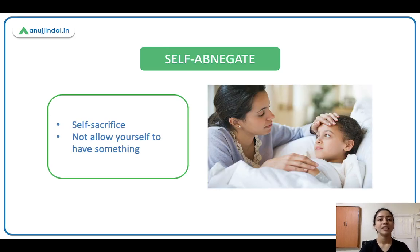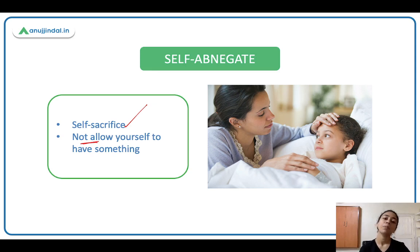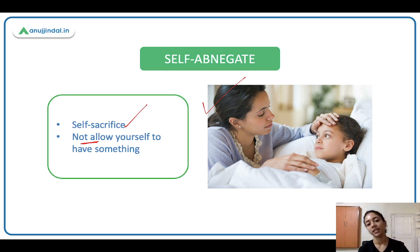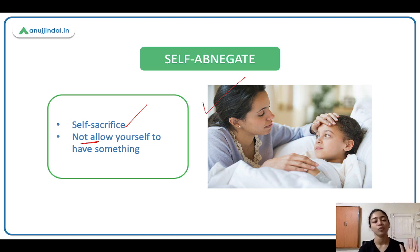Self-abnegate means self-sacrifice — not allow yourself to have something. Aap sacrifice karo. Jaisi a mother sacrifices for her child, a mother self-abnegates. She doesn't allow herself to have certain things so her child can have those things. Whatever the child wants, she buys it for him, but khud ke liye she's not going to buy anything. She's self-sacrificing, she's self-abnegating.